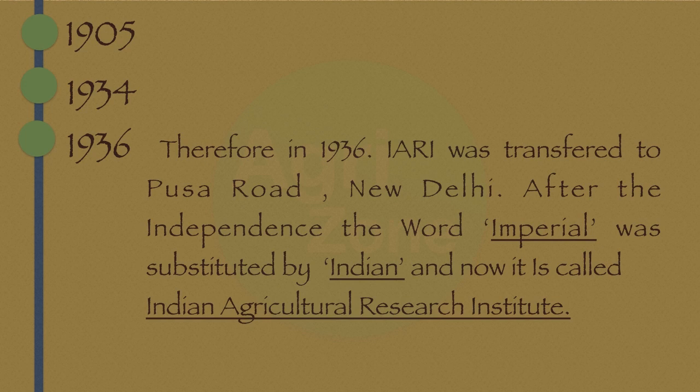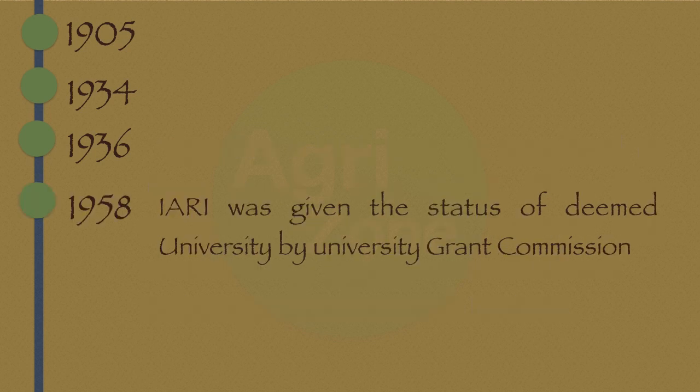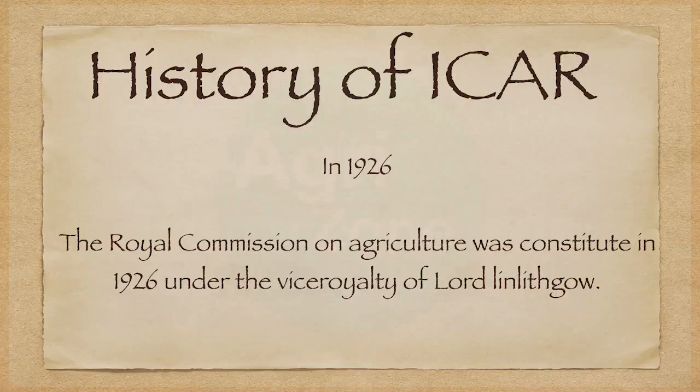After independence, the word 'Imperial' was substituted by 'Indian', and now it is known as the Indian Agricultural Research Institute, or IARI in short. In 1958, IARI was given the status of a deemed university by the University Grants Commission.